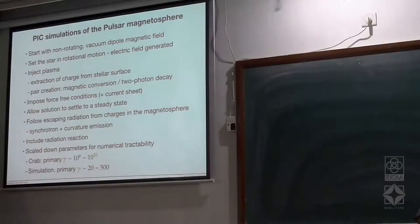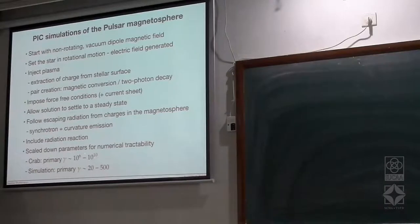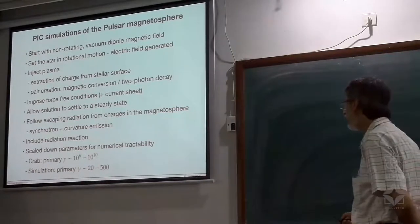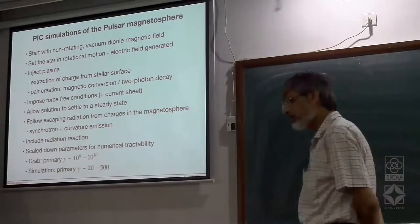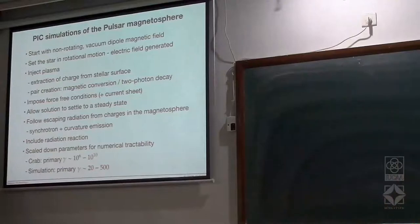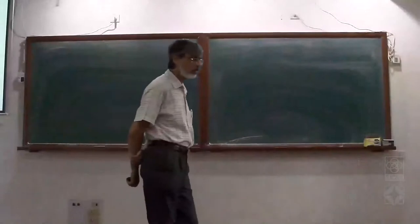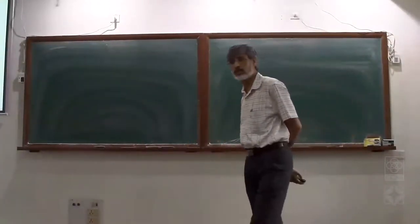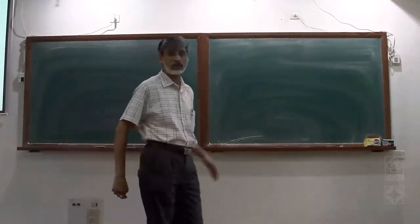Just to compare: if you take the Crab pulsar, the primary Lorentz factors lie in the range 10^6 to 10^10. In the simulation, the primary Lorentz factors are limited to between 20 and 500 — beyond that, they cannot be tracked right now. So in a sense, this is a qualitative analog of the pulsar high-energy emission model, but to get true quantitative representation, many orders of scaling would be required.